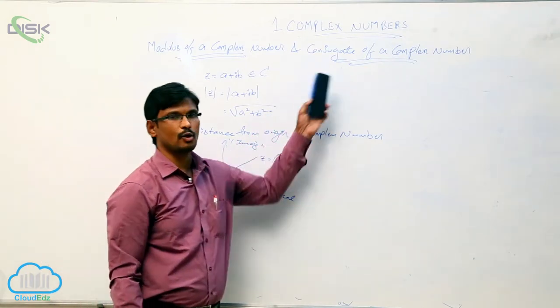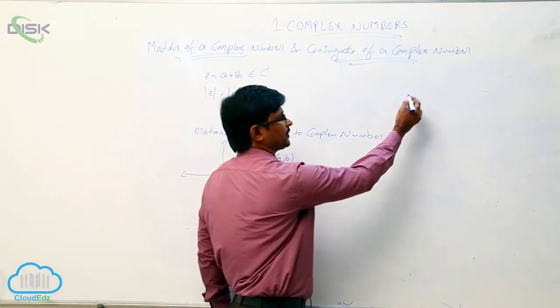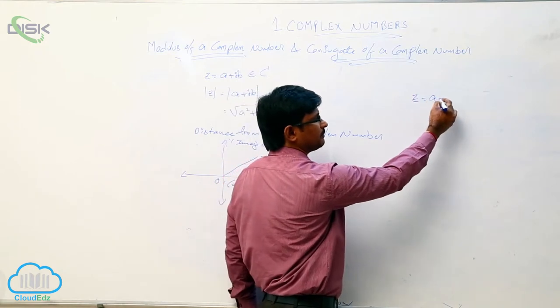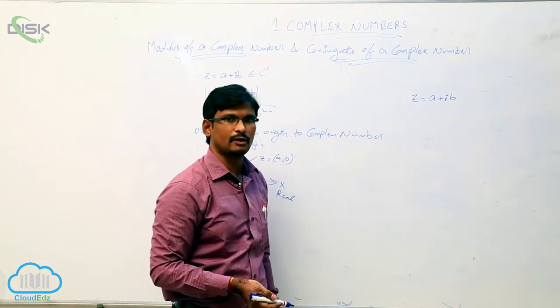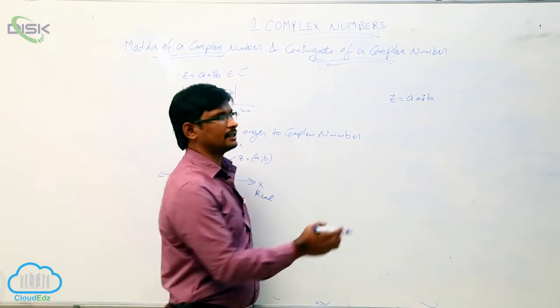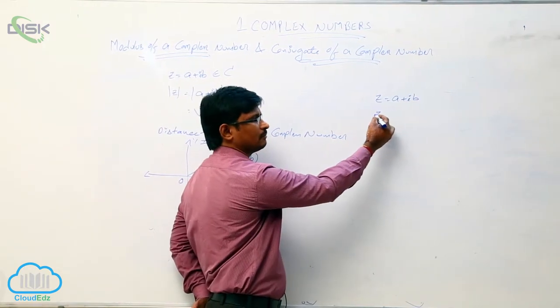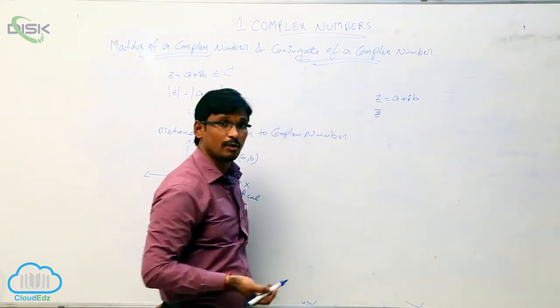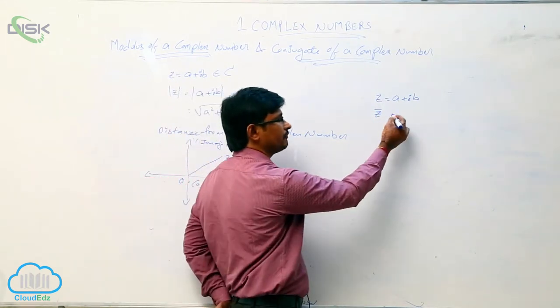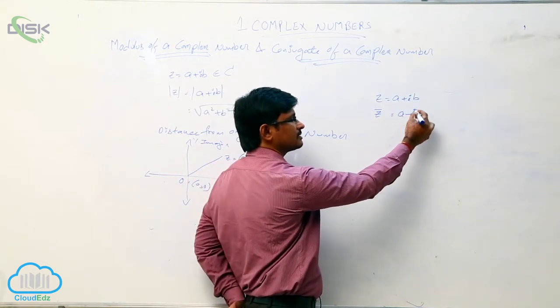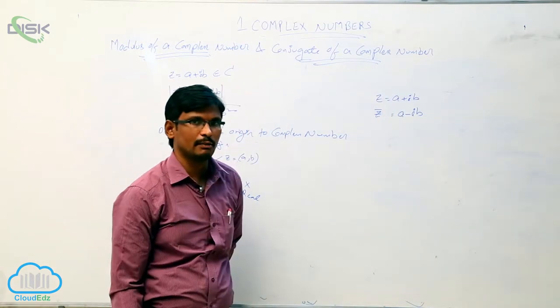Now we will see what is the conjugate of complex number. If z equal to a plus ib is complex number, then conjugate of this complex number is denoted by z bar and is defined as a minus ib.